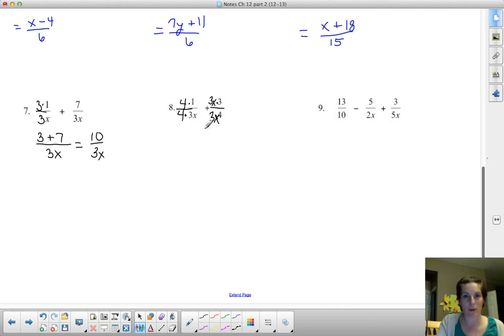And since it's a positive, I don't have to worry about that negative sign. So now, I keep my common denominator of 12x, my numerator, the first one, 4 times 1 is 4,